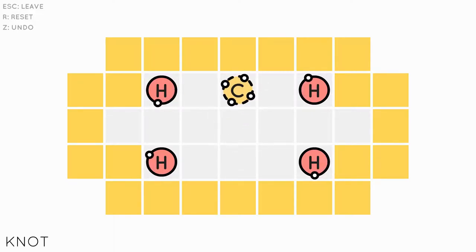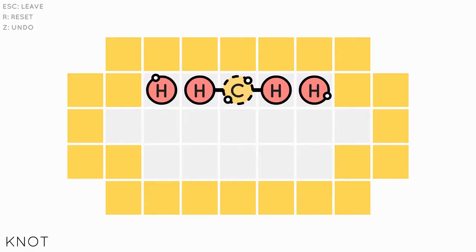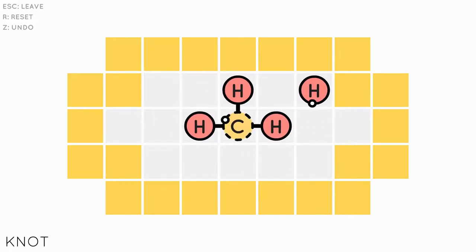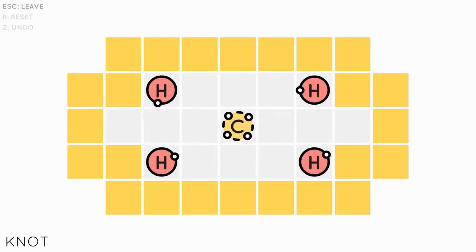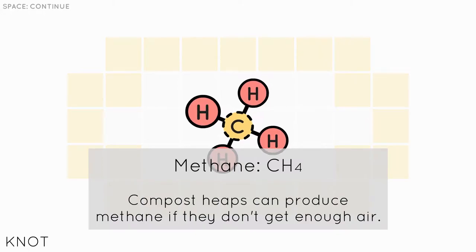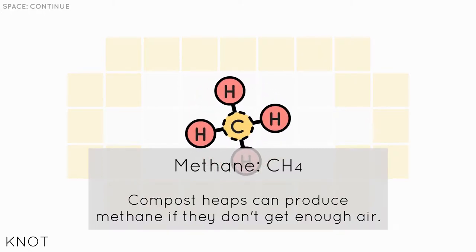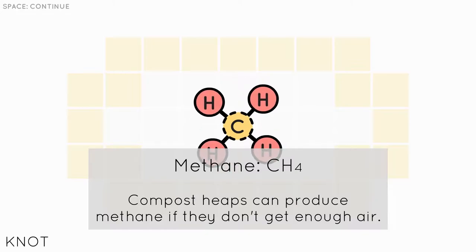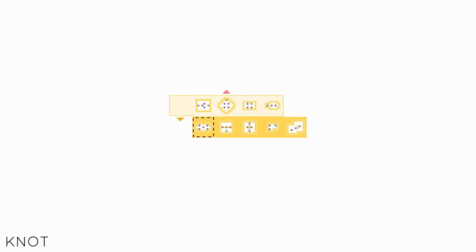There has to be some sort of trick to this. I can't get the left ones otherwise then I can't get the bottom right. Oh that's how you do it. That's why there's notches. I got it now. I'm so smart. Methane CH4. Compost heaps can produce methane if they don't get enough air. Alright so we finished the bottom row.